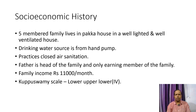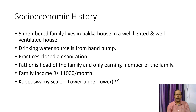Socioeconomic history: A five-membered family lives in a pucca house that is well-lighted and well-ventilated. The source of drinking water is a hand pump. The family practices closed drain sanitation. Father is the head of the family and the only earning member, with a total family income of rupees 11,000 per month. According to the Kuppuswamy scale, she belongs to the lower upper-lower class.